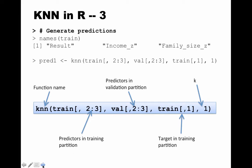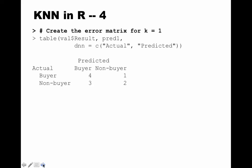The function generates a set of predictions which we store in pred1 — we're not adding these to the data frame, just storing them separately. Once we have predictions in pred1 and actual values in val$result, we create the error matrix for the validation partition using the table function: table(val$result, pred1) with dnn = c('actual', 'predicted').